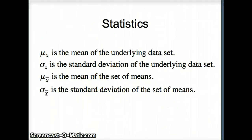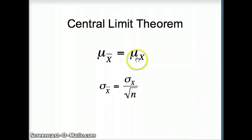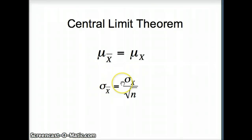Here are the rules. According to the Central Limit Theorem, the mean of the set of averages — the mean of the x-bars — is the same as the underlying mean. We saw that in our example where C1 and C51 had essentially the same mean. But the standard deviation of the averages should be the underlying standard deviation divided by the square root of N.